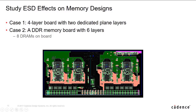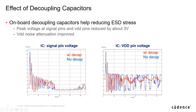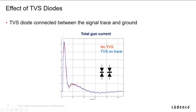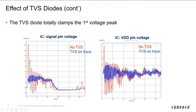Now let's take a memory design example and use the new workflow to study ESD effects on a printed circuit board. First, let's examine what decoupling capacitors do when ESD strikes. The two pictures show voltages at different pins on the memory device. Blue traces represent no decoupling capacitors on board, and red traces represent with decoupling capacitors. We can see clearly that decoupling capacitors help reduce ESD voltage value and duration significantly. Now let's check if TVS diodes can help reduce ESD impact. The current going through the gun is not affected by TVS diode presence. However, on signal and power supply pins, the existence of TVS makes a big difference.